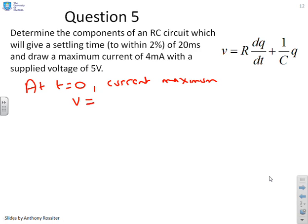The reason you can tell that is when you start, there's no voltage across the capacitor, so all the voltage goes across the resistor. So what we have is V equals IR at T equals 0. Now, we're given the maximum I, and we're given V. So if I put those numbers in, I get 5 equals 4 times 10 to the minus 3 times R. And if I solve that, that gives me R equals 1250 ohms. So that bit is relatively straightforward, so we now know what the R should be.